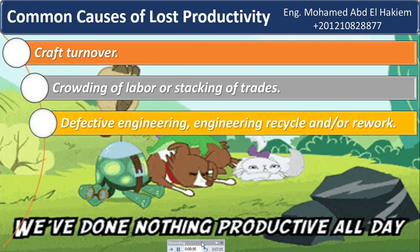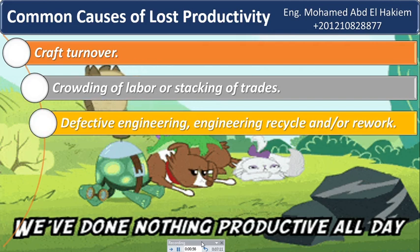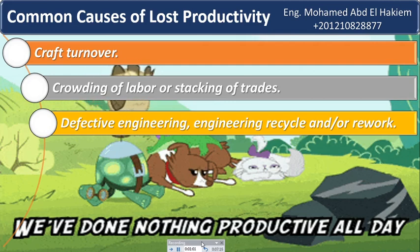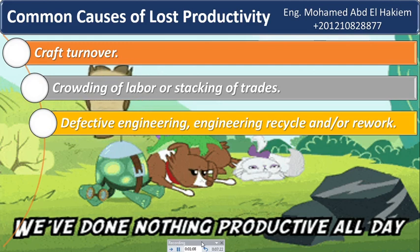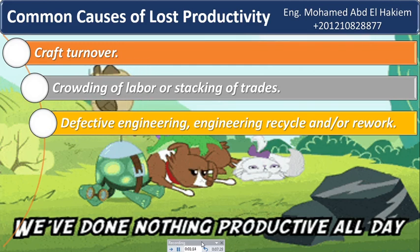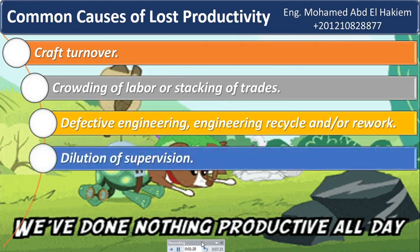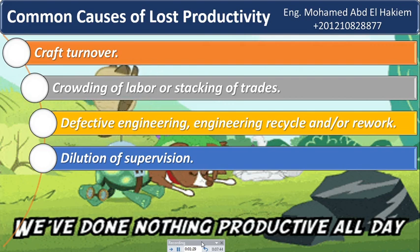Nine: defective engineering, engineering recycle, and/or rework. When drawings or specifications are erroneous, ambiguous, or unclear, productivity is likely to decline because crews are uncertain as to what needs to be done. Crews may slow down, pace their work, or stop altogether while waiting for clear instruction. Ten: dilution of supervision. When crews are split up to perform base scope work and changed work in multiple locations, field supervision is often unable to effectively perform their primary task of ensuring crews work productively.